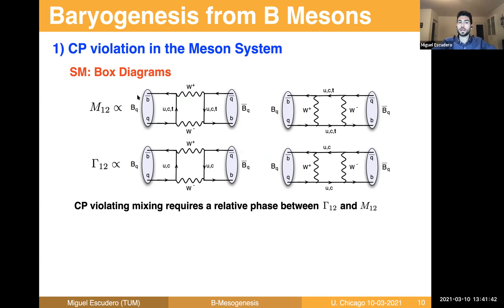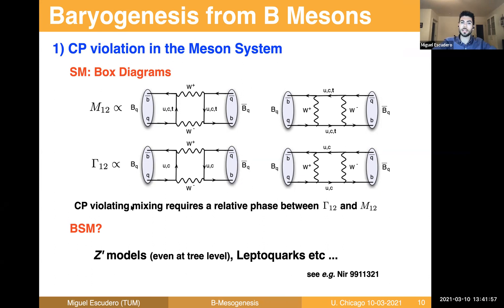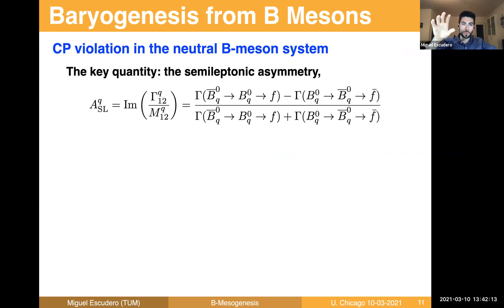In order to have CP violation, one requires not only oscillation but also a relative phase between the width mixing and the mass mixing. Beyond the standard model, there are many scenarios that can contribute to the neutral B meson mixing, in particular the mass mixing, including leptoquark models, R-parity violating scenarios, and others. The key quantity I'm going to use throughout the talk is the semileptonic asymmetry A_SL. We have two — one for the B_d and one for the B_s meson. In terms of things that we can measure, it's essentially the number of times a B meson decays to a particle minus the number of times it decays to an antiparticle, divided by the sum of the two.